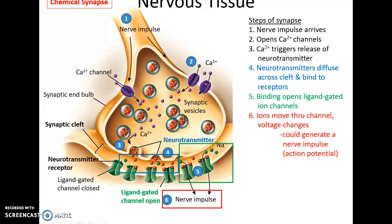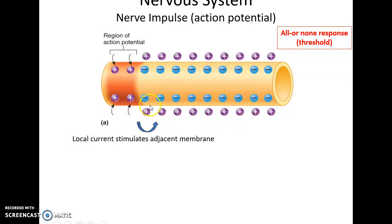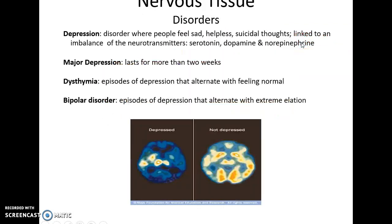When sodium ions pass into the postsynaptic neuron, this can lead to the action potential being generated. The action potential — or nerve impulse — is a change in charge over a localized area. If threshold is reached, the change in charge stimulates neighboring voltage-gated ion channels to open, thereby transmitting the impulse down the length of the axon.